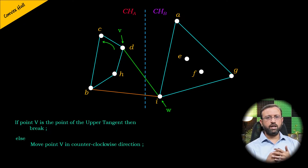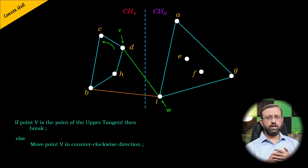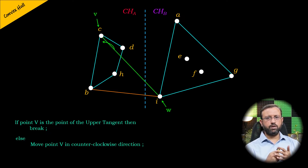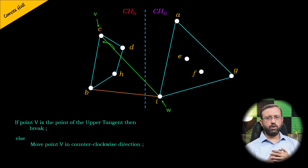We move point V in the counterclockwise direction — that means we select another point V in the left convex hull in the counterclockwise direction. Point C is the next point in the counterclockwise direction and becomes point V. We again check if the point V of the line segment VW is the point of the upper tangent for the left convex hull. In this case, point V is the point of the upper tangent for the left convex hull because it is the highest point in the left convex hull. So we stop.